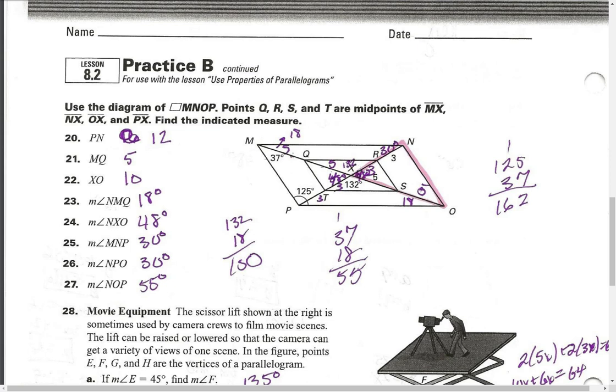This angle up here is 30. So when you do 30 plus 132 and subtract from 180, you get 18.